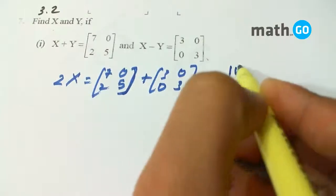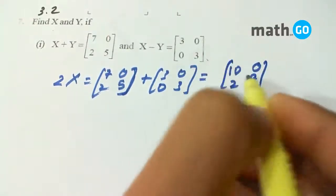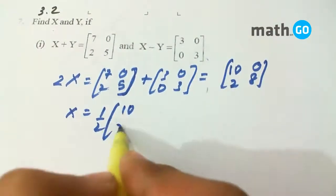So it will be [10, 2, 0, 8], and X is equal to 1/2 of [10, 2, 0, 8].